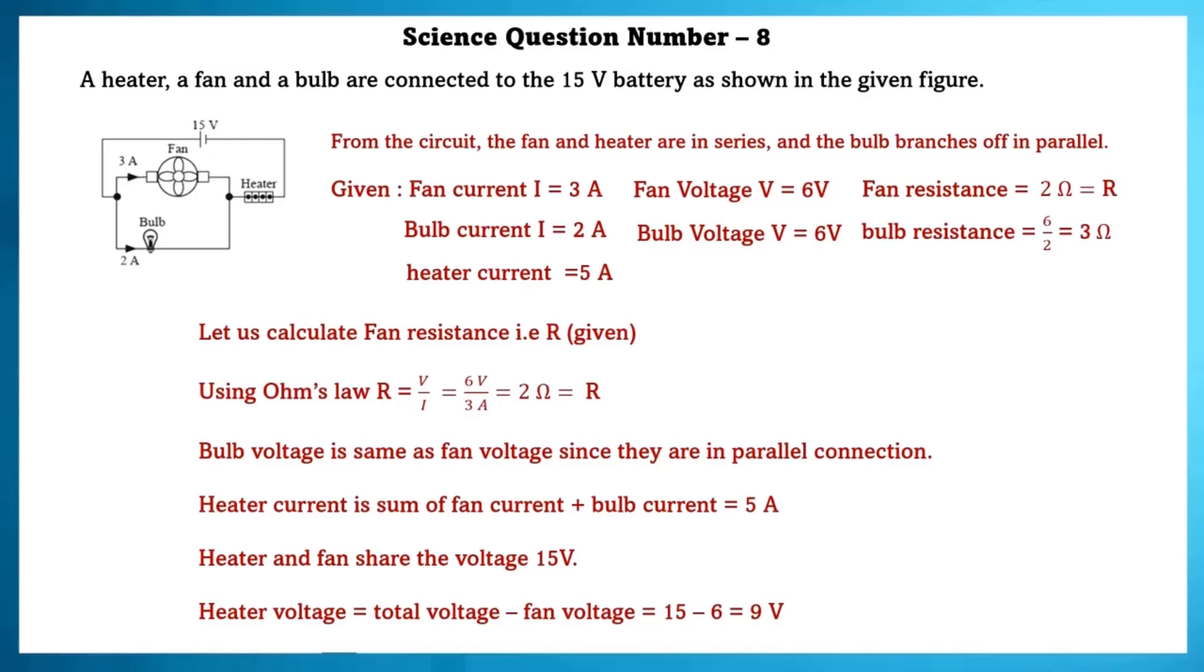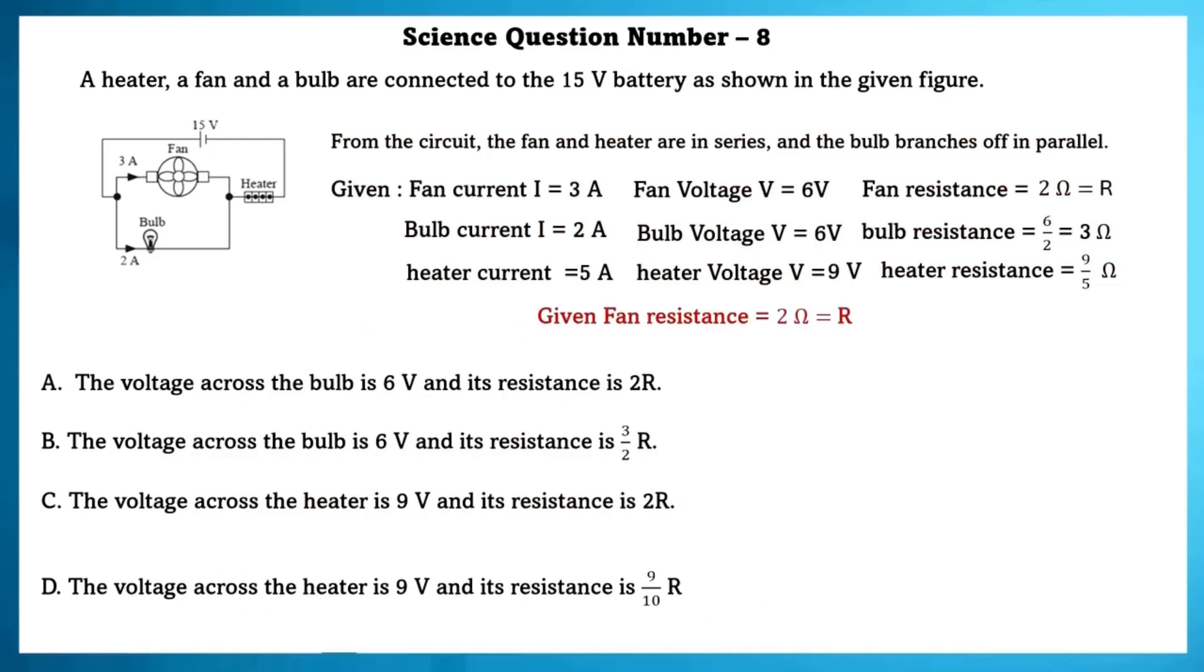Heater current is the sum of fan current plus bulb current, which is equal to 5A. Heater and fan share the voltage of 15V. Heater voltage is equal to total voltage minus fan voltage, which is equal to 9V. So, using this, heater resistance is equal to 9 by 5 Ohms. Given fan resistance is equal to 2 Ohms, which is equal to R. The voltage across the bulb is 6V. Yes, this is true. And its resistance is 2R. Here, the value of R is equal to 2 Ohms. Given resistor of bulb is equal to 2 into R, which is equal to 2 into 2, that is 4 Ohms, which is not equal to 3 Ohms. Because the resistance of bulb is 3 Ohms.